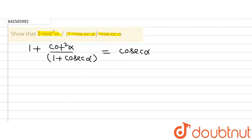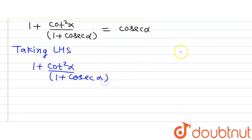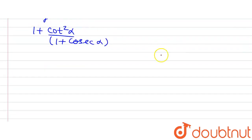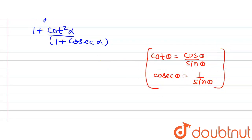We are going to take the left hand side of this equation and prove it is equal to the right hand side. Taking the left hand side of the equation: (1 + cot²α) divided by (1 + cosecα). We know that cotα equals cosα divided by sinα, and cosecα equals 1 divided by sinα. These are the two relations we are going to use.